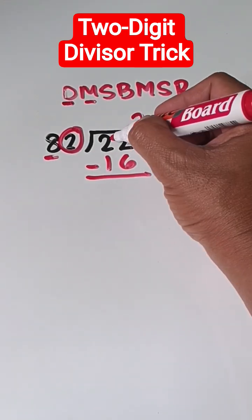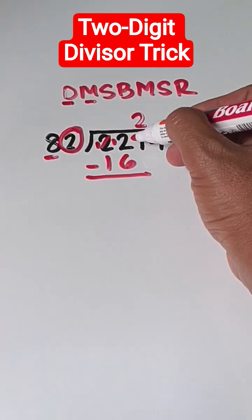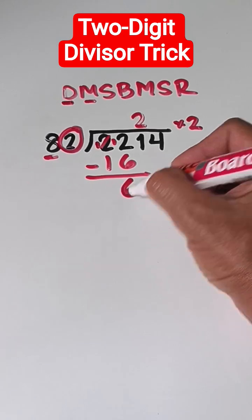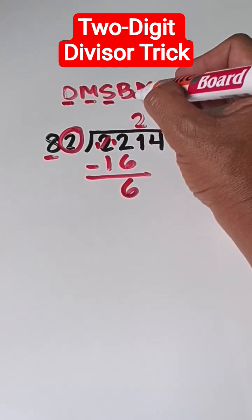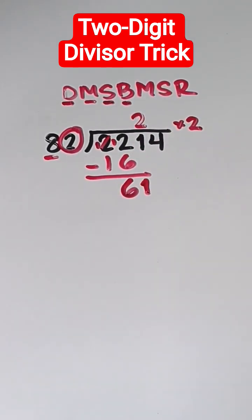Then, subtract. This will become 12 and this will become 1. 12 minus 6 is 6. And then, after subtracting, we bring down the next number, 1.